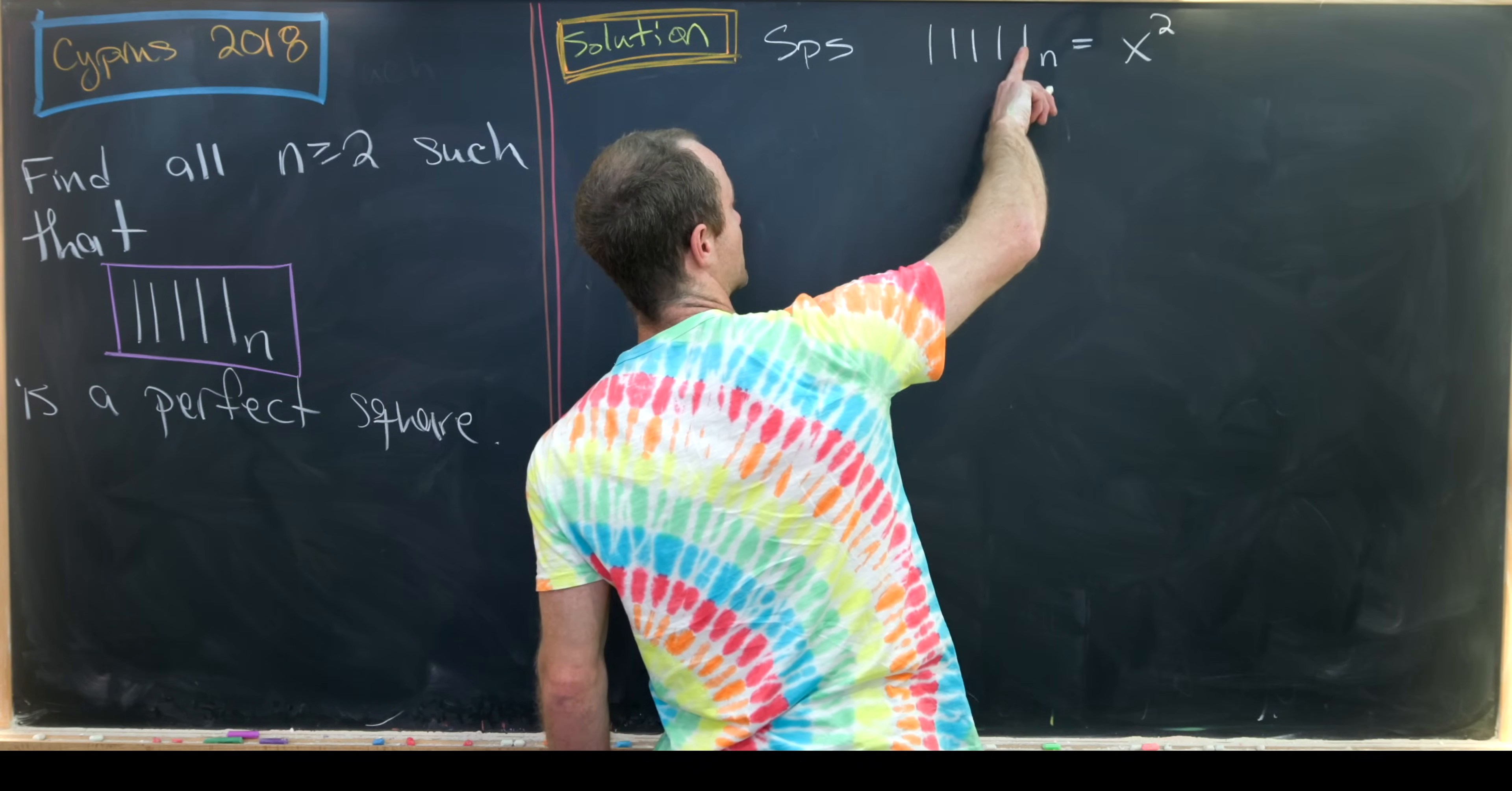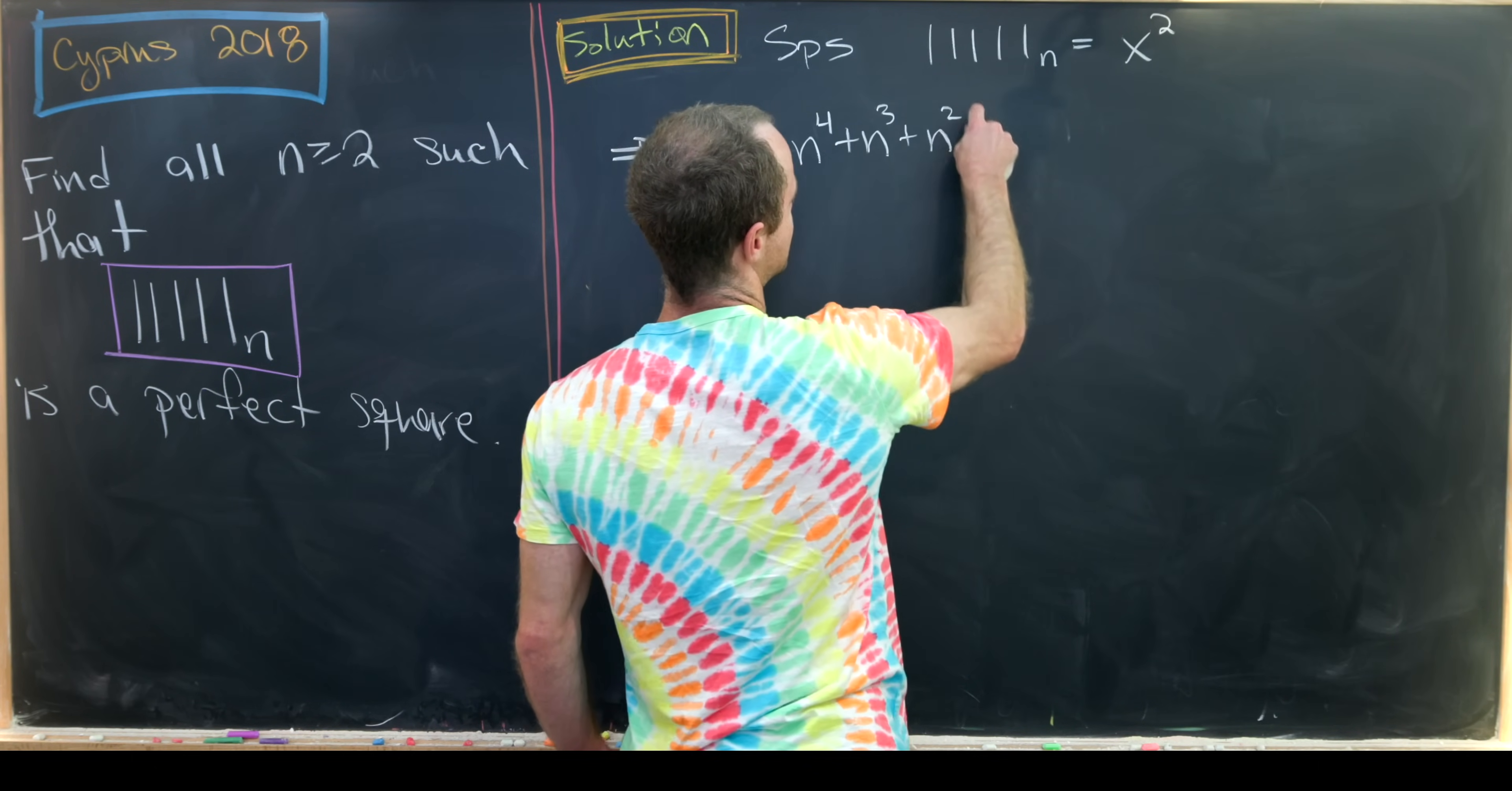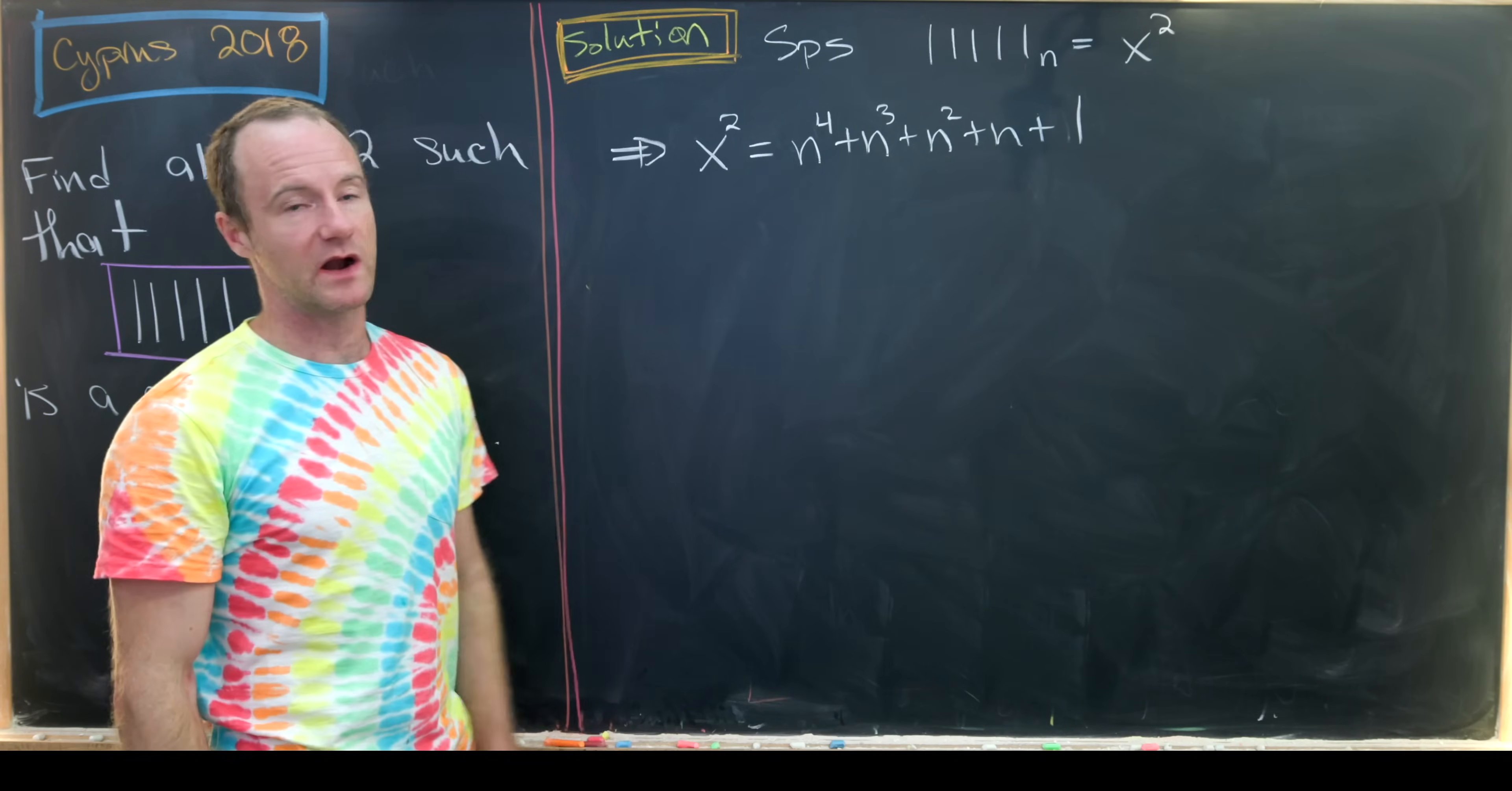So this is going to be our n to the 0 coefficient. So this is our n to the 0 place, our n to the 1st, 2nd, 3rd, 4th place. And they all have a coefficient of 1. So that means we have the equation x squared equals n to the 4th plus n cubed plus n squared plus n plus 1. So in fact, this statement over here is equivalent just to finding all perfect squares of this form.